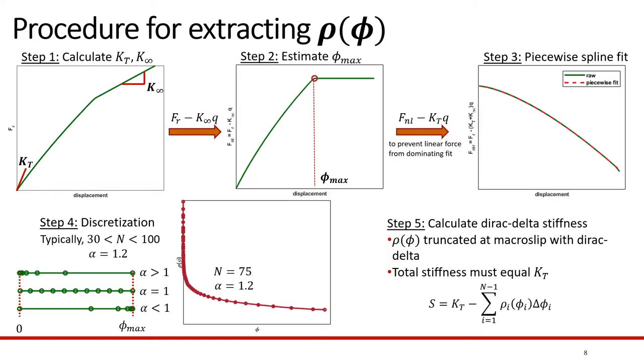Next, we'll look at the implementation procedure for obtaining this distribution function from the backbone curve. The first step is to get K_T and K_infinity. K_T is the low amplitude tangential stiffness and K_infinity is the linear macro slip stiffness. Both can be obtained using finite difference. Once we get these values, we can subtract out K_infinity times Q from the total restoring force to get the non-linear restoring force, which can then be used to estimate phi max, the displacement at which macro slip occurs. This equals the displacement at which the slope of the curve goes to zero.